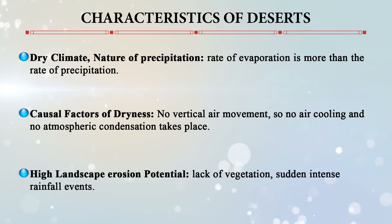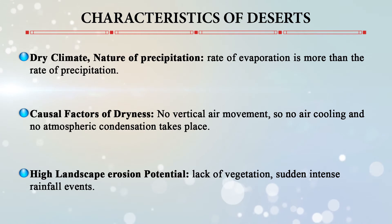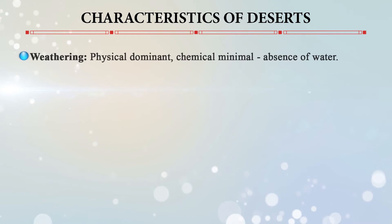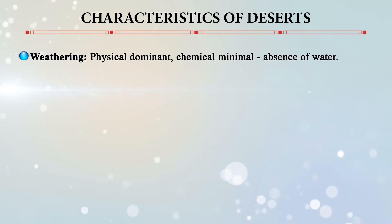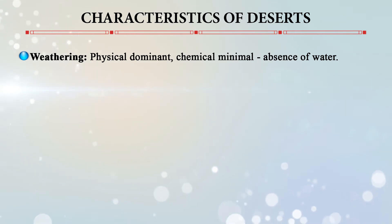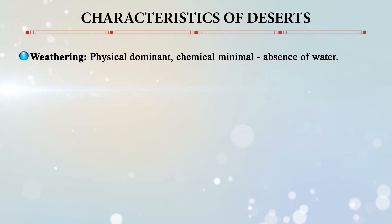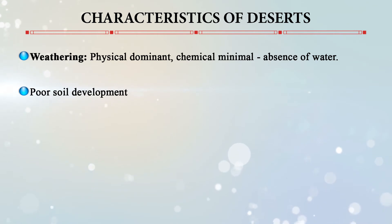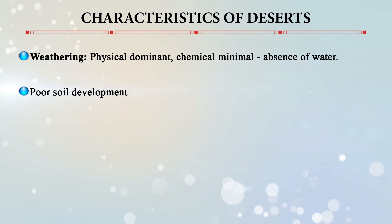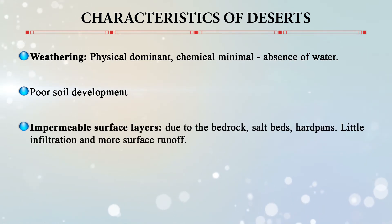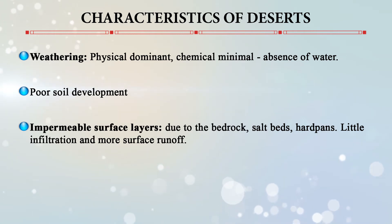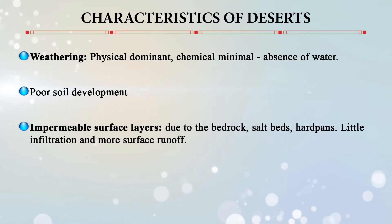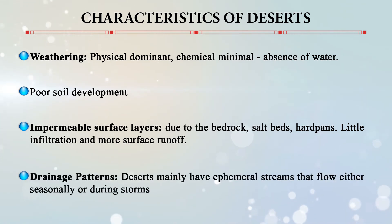Additional desert characteristics include lack of vegetation, sudden intense rainfall events, and predominantly physical weathering — chemical weathering is minimal due to the absence of water. Poor soil development results from the dry conditions. Impermeable surface layers from bedrock, salt beds, and hard pans limit infiltration and increase surface runoff, causing problems for agriculture and plant growth. Drainage patterns are also characteristic, featuring ephemeral streams that flow only seasonally or during storms.